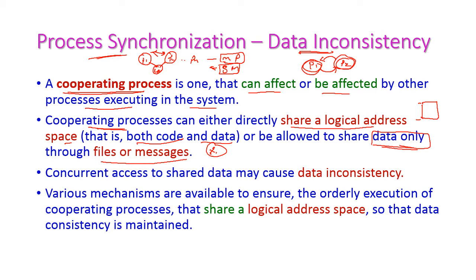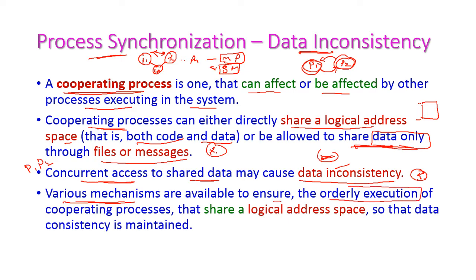If two processes concurrently access the shared data — that is, P1 and P2 access the shared data simultaneously — then it may cause data inconsistency. This is our problem. If the shared data is accessed by both processes simultaneously, then data inconsistency may occur. To solve this, we have various mechanisms to ensure orderly execution. If processes execute in an order, we can solve the data inconsistency problem and maintain data consistency.